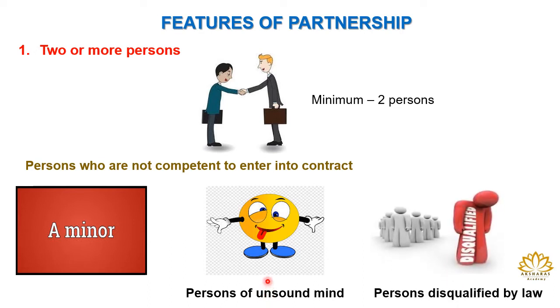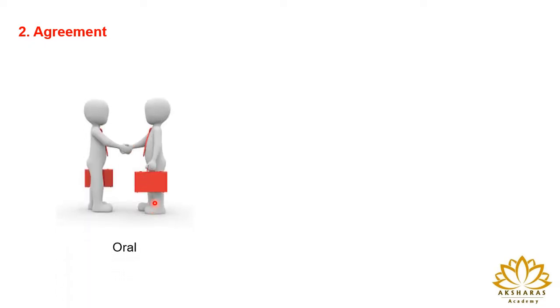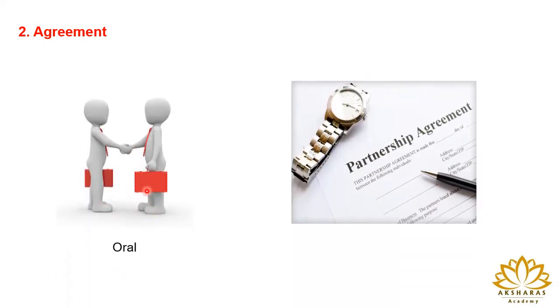A company disqualified by law cannot enter into a contract. The next feature is agreement. A partnership firm comes into operation when the persons agree to become partners and agree to the terms and conditions of the partnership. This agreement may be in oral form, that is by word of mouth, or it may be in a written form. When it is in written form, the document will be signed by all the partners and it becomes the partnership deed.